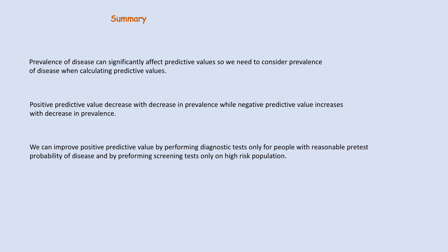In summary, prevalence of disease can have a significant effect on predictive values, so we need to consider prevalence when calculating predictive values. We can improve positive predictive value by performing diagnostic tests only on people with high pretest probability of disease and by performing screening tests only on high-risk populations.